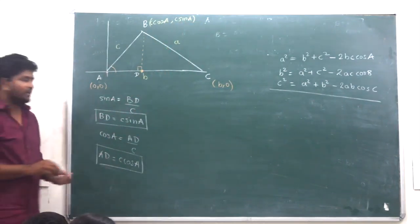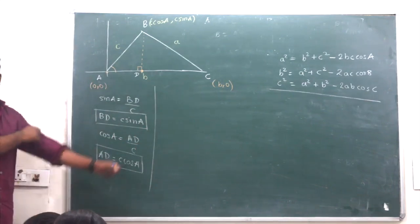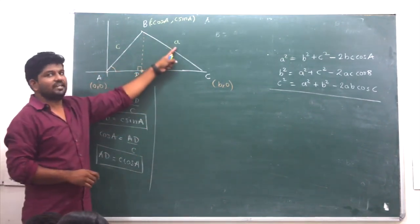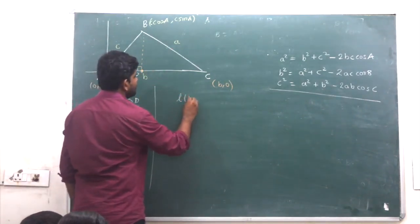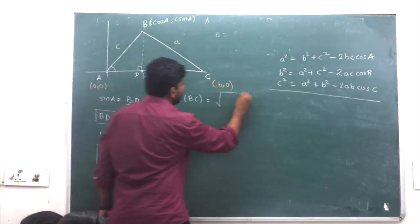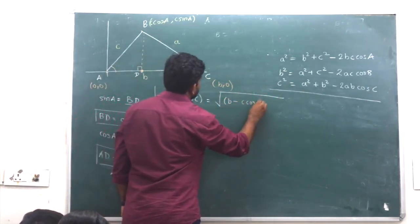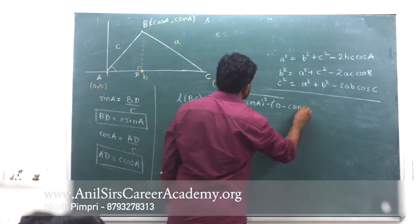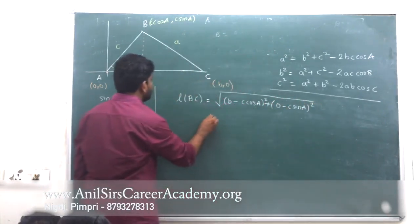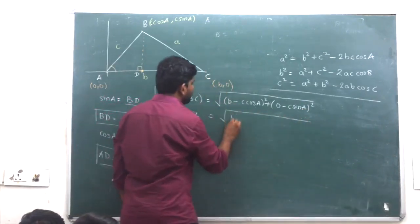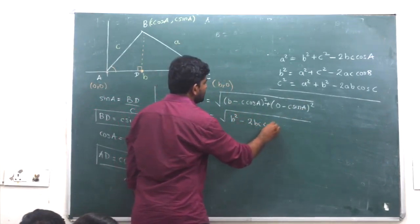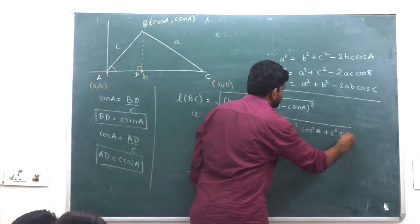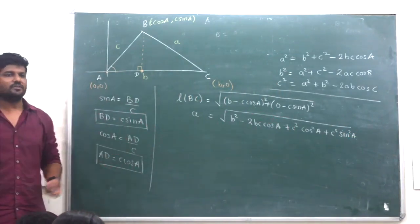Then apply distance formula between B and C. If you know BC length, that's a. What formula is angle A? First formula is a square. This is distance a. Distance formula can be used. So what is length BC? Find it using distance formula. Under root: x2 minus x1 whole square plus y2 minus y1 whole square. It is length BC. After squaring and opening brackets, we get b square minus 2bc cos A plus c square sin square A plus c square cos square A.